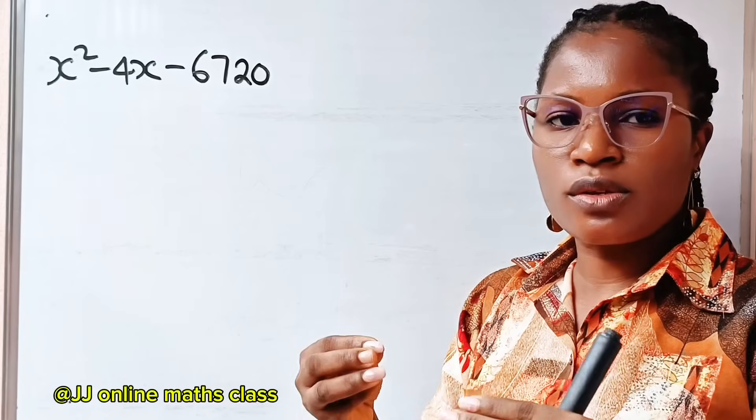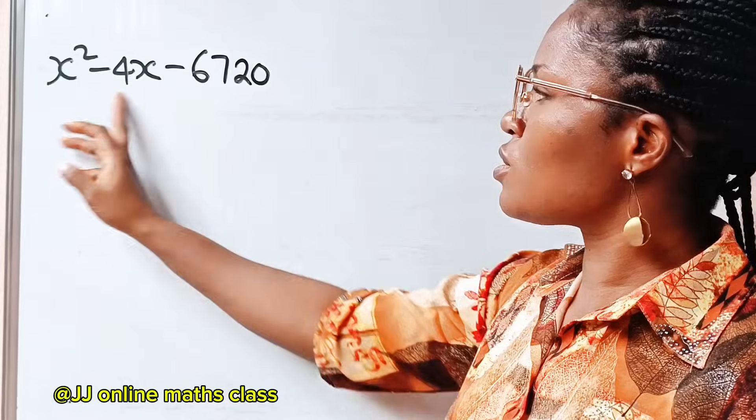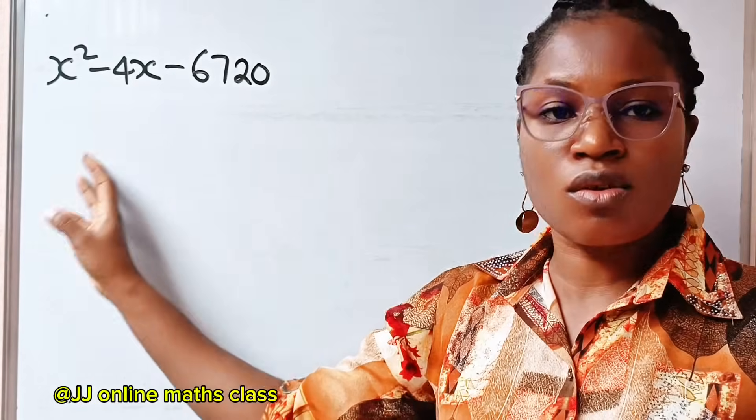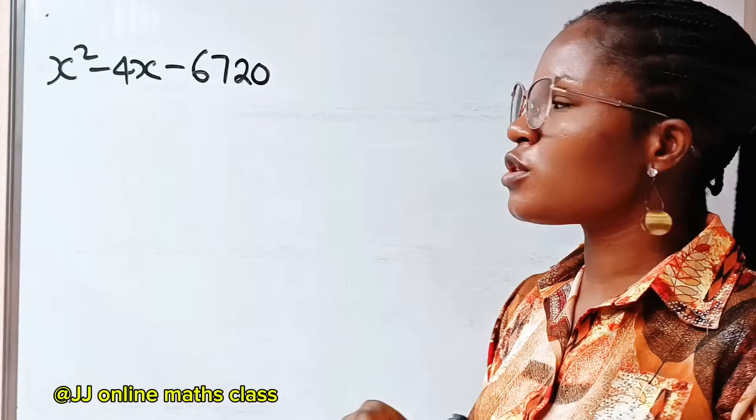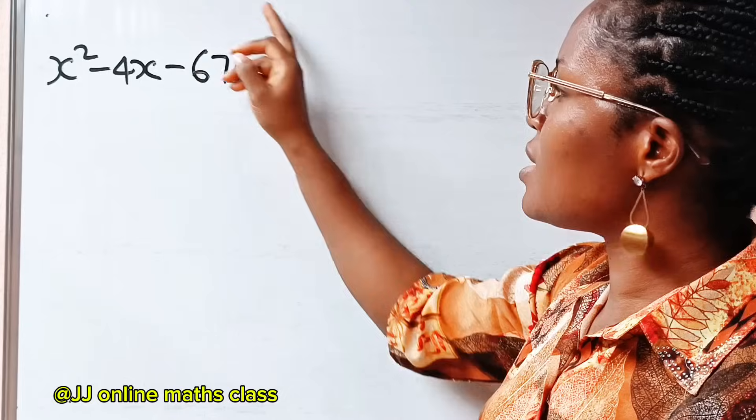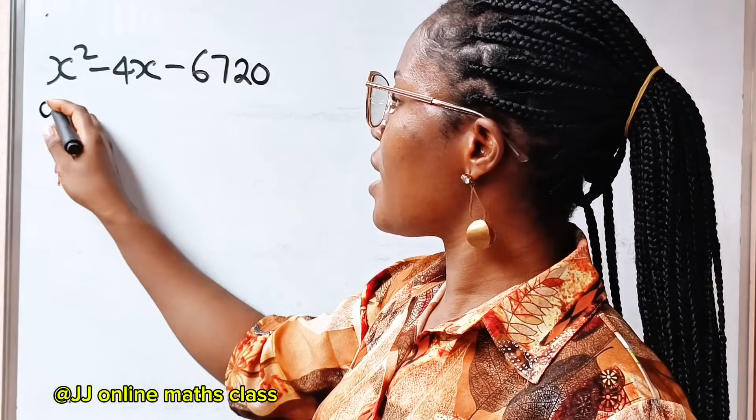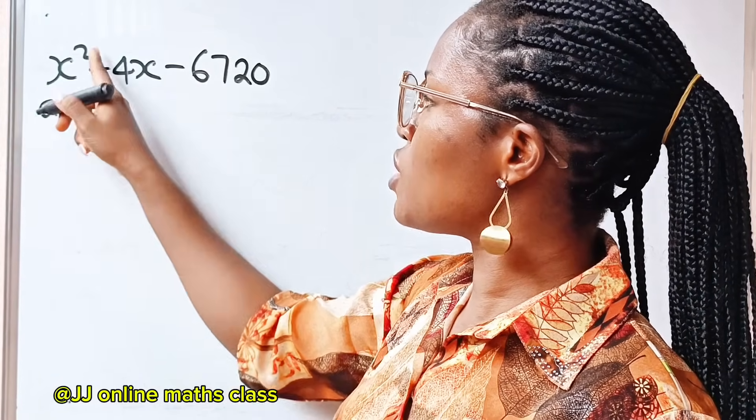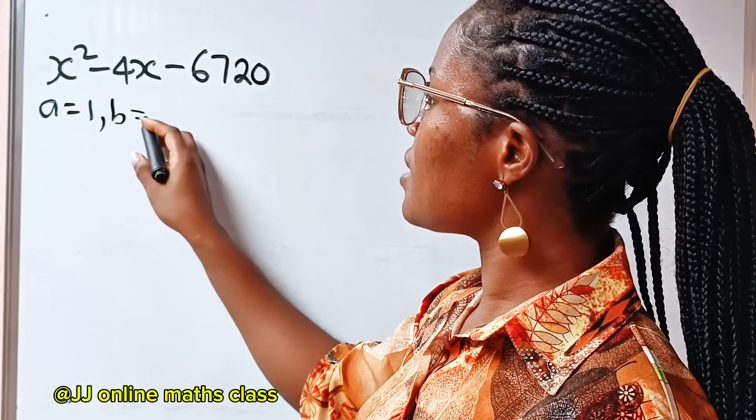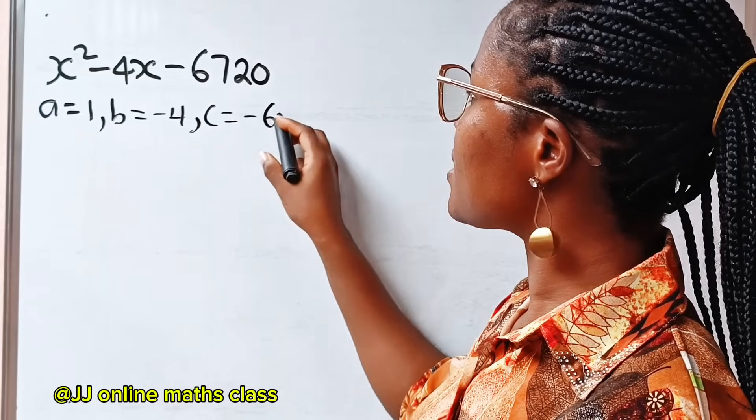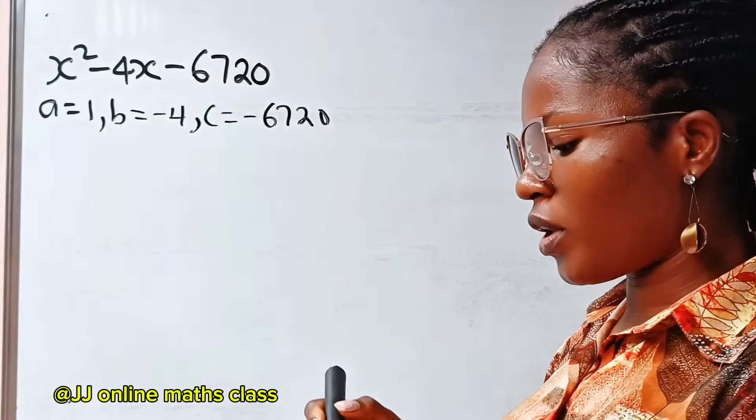First, we are going to start with what we already know. When you are asked to factorize this, the first thing that we are going to do is we are going to concentrate on this minus 6720. Now, A here is equal to 1, the coefficient of x squared. B here is equal to minus 4, and C is minus 6720.